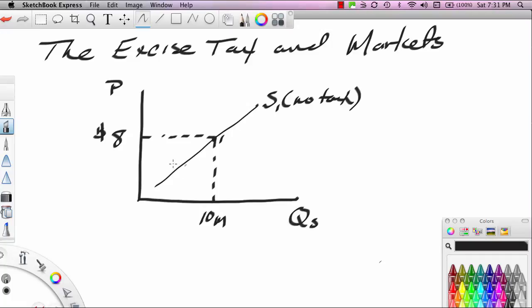Now let me put a point on here first. Let's identify a point and say that at a price of $8 a pack, 10 million packs are sold. So this is point 0.1 on our S1 supply curve. This supply curve shows that if the price goes down, producers want to produce fewer cigarettes. And if the price goes up, producers want to produce and carry more cigarettes.